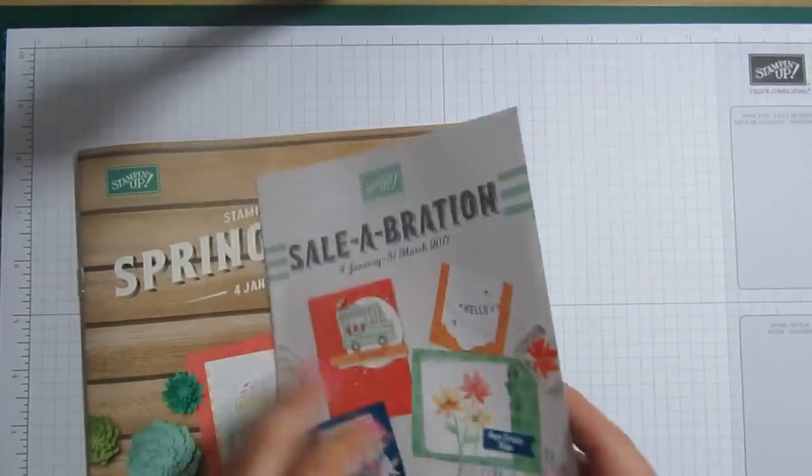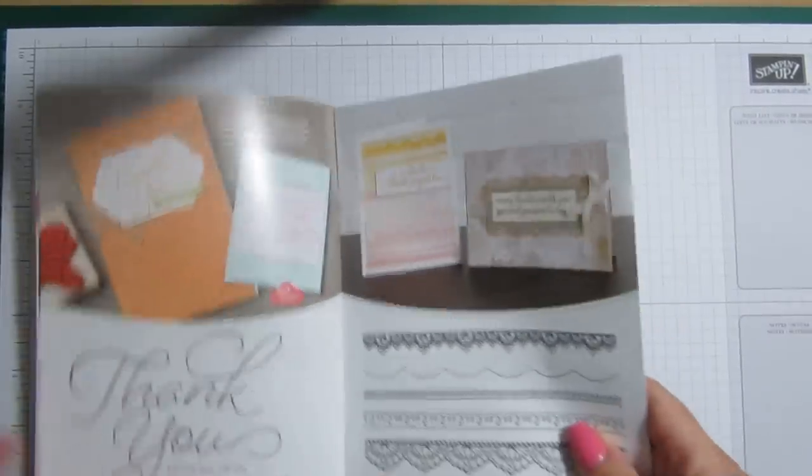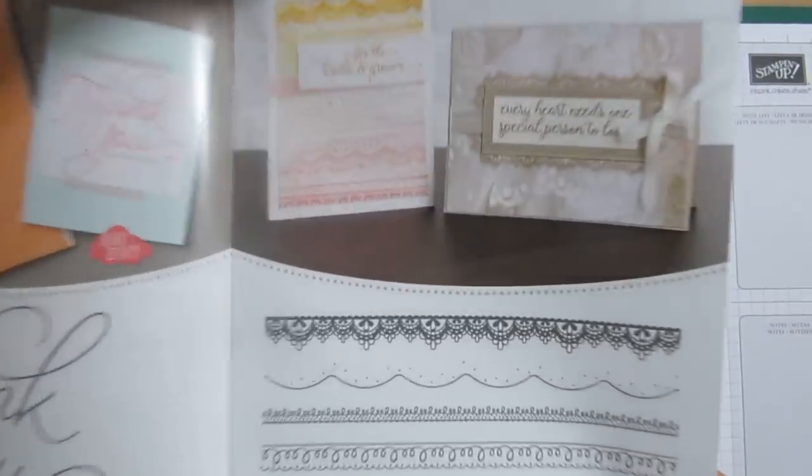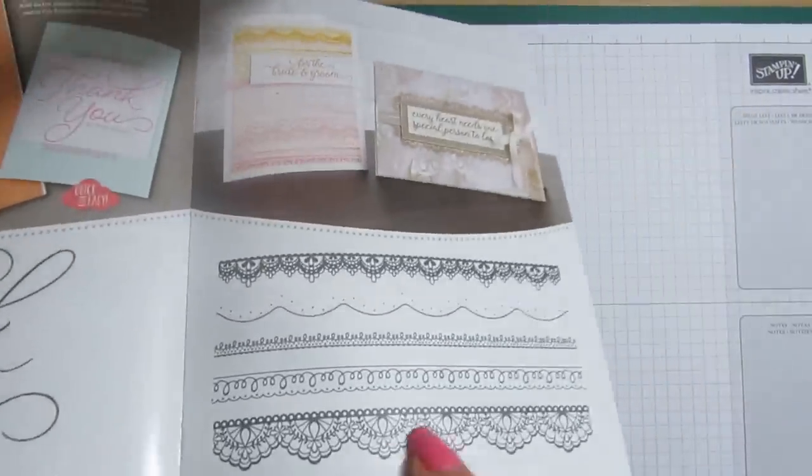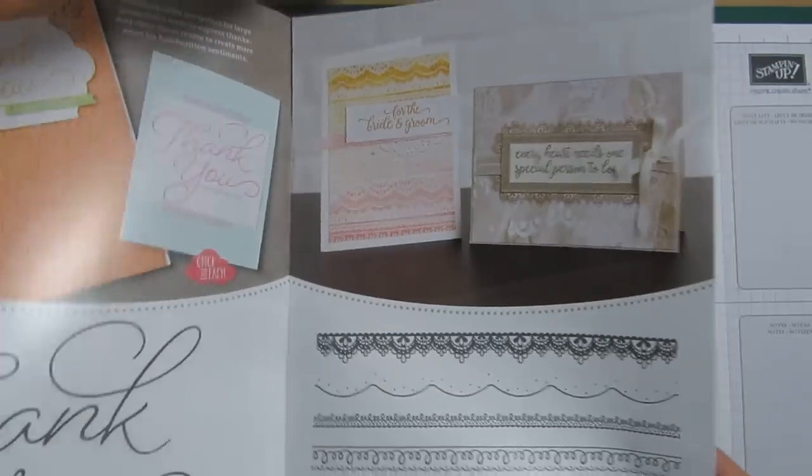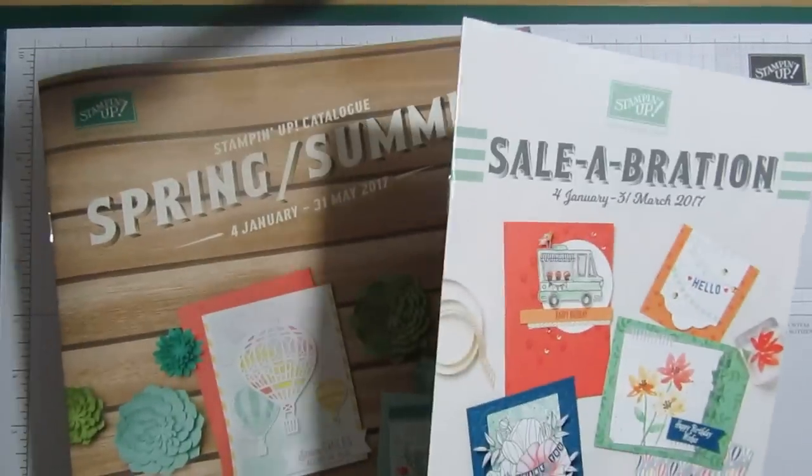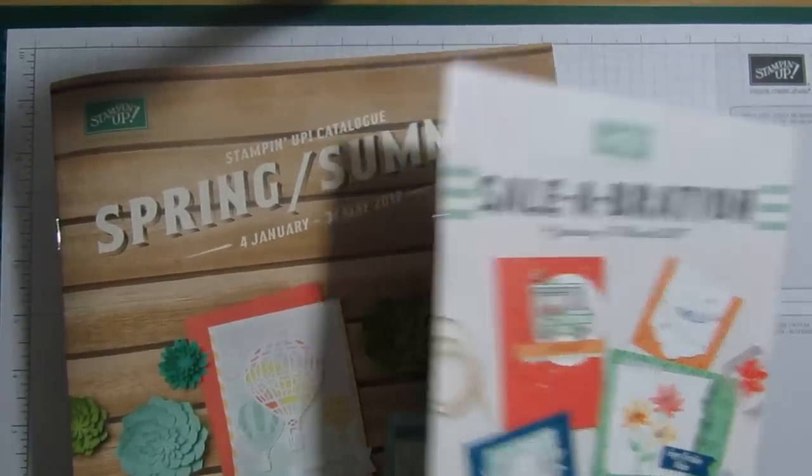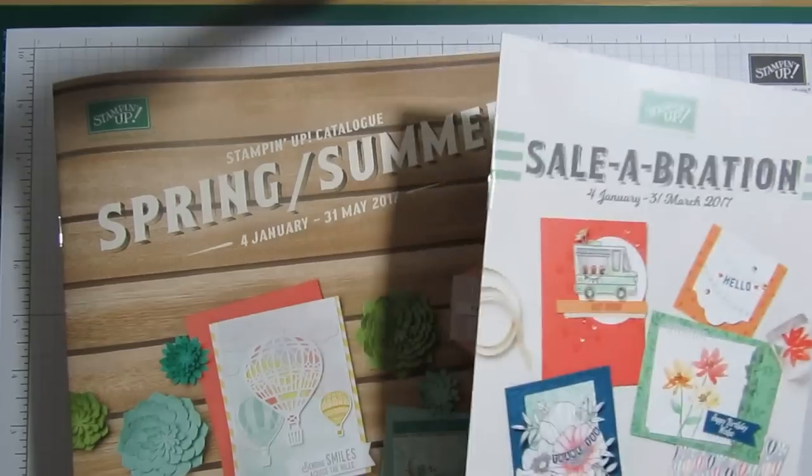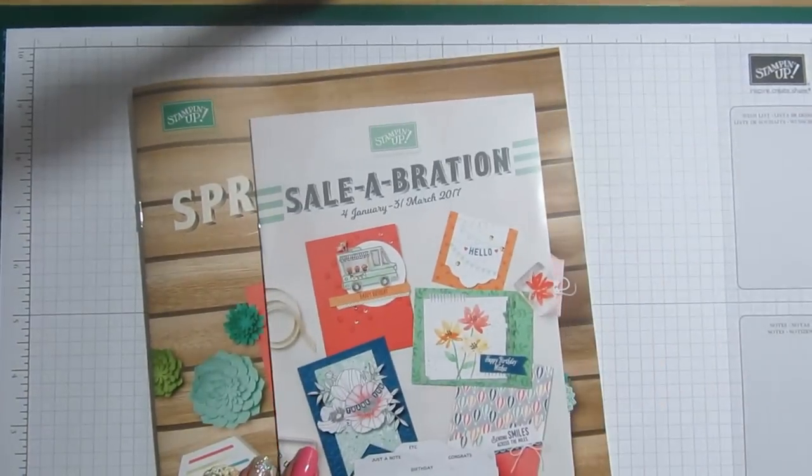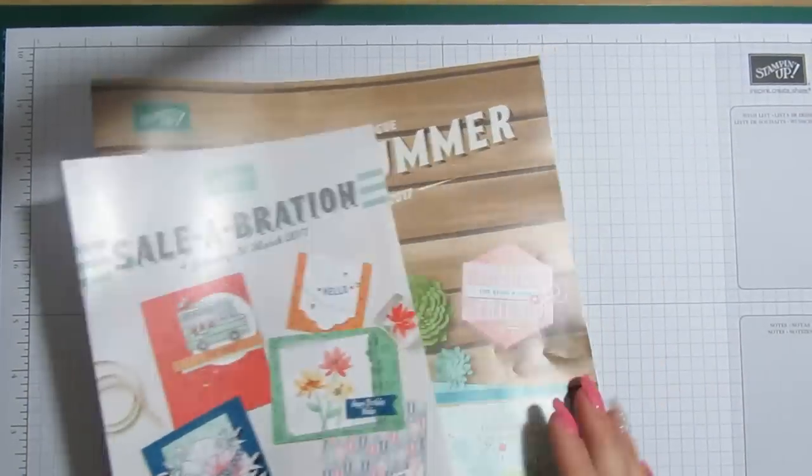And then the stamp set we're going to use from Saleabration is Delicate Details and again that's beautiful, it really is. And if anyone would like any copies just get in touch, you can leave a comment on here or go onto my website and I'll send you a copy out straight away. So I don't want to witter on about that too much.